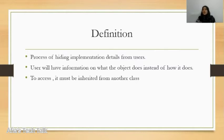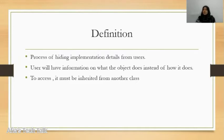In the abstract class, the user will have information about what the object does, instead of how it does it. We cannot apply different implementation details about what the object does.